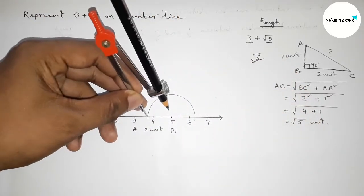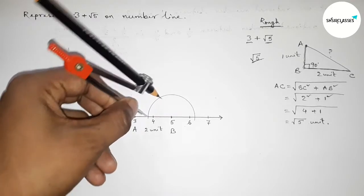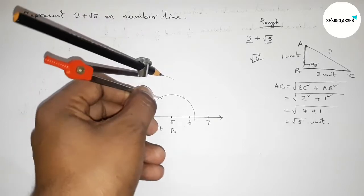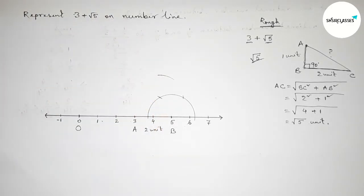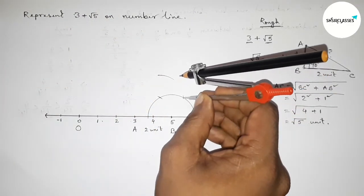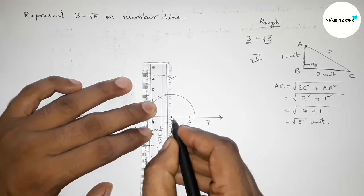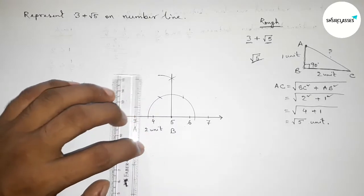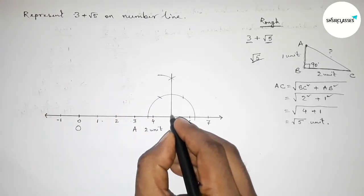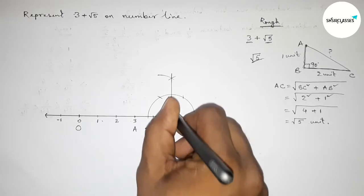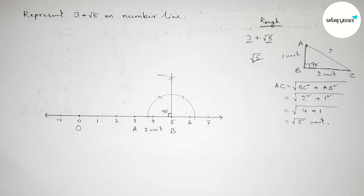And putting the compass here and taking the same length and cut here, and putting the compass here and cut here, and drawing an arc here again with the same length, and putting the compass here and cut here. So now joining this to get here a 90 degree angle.